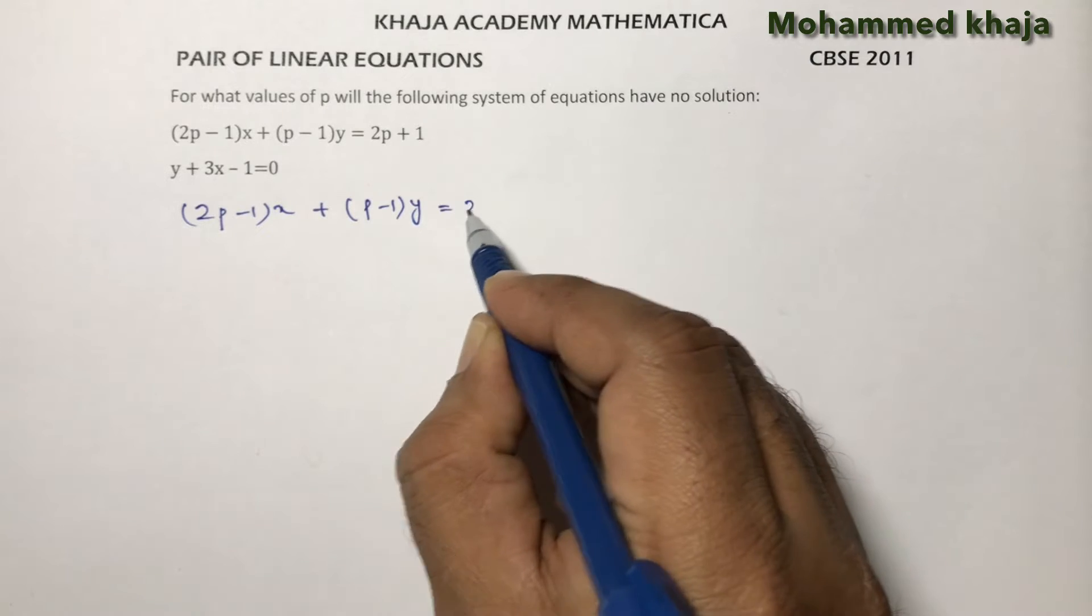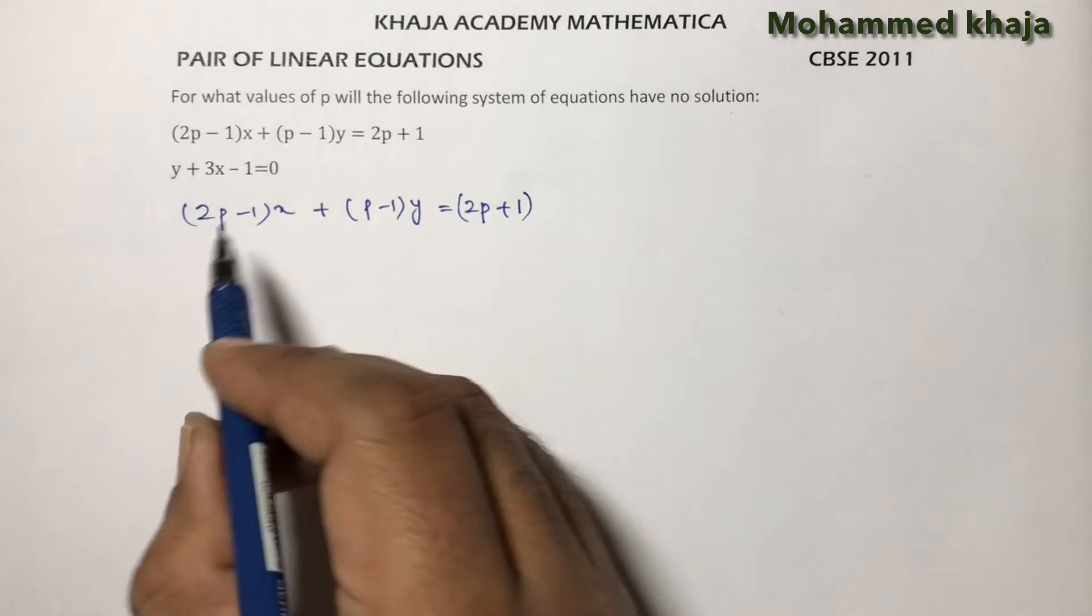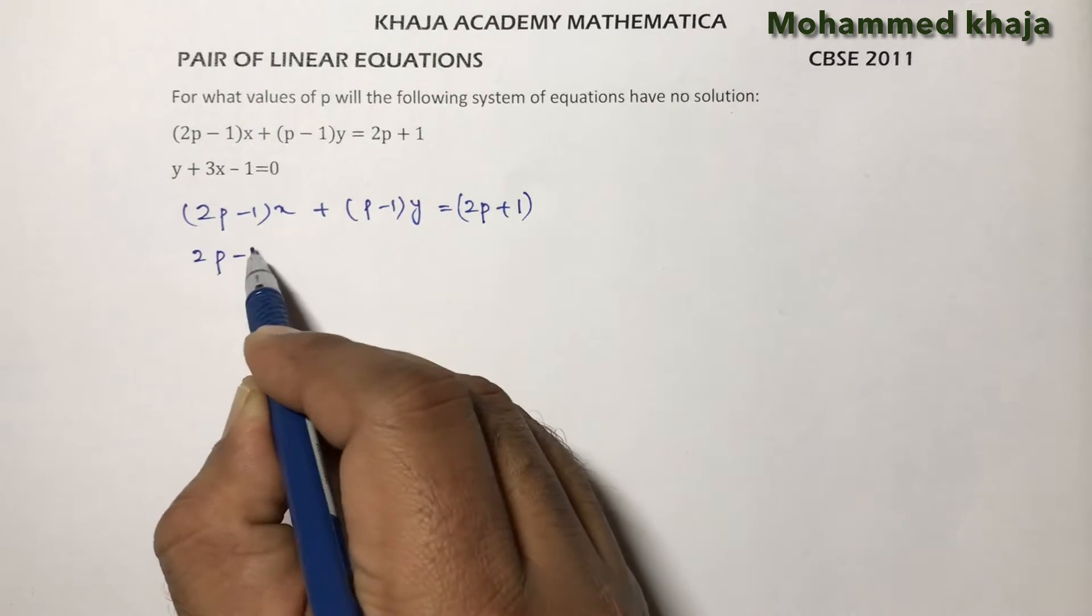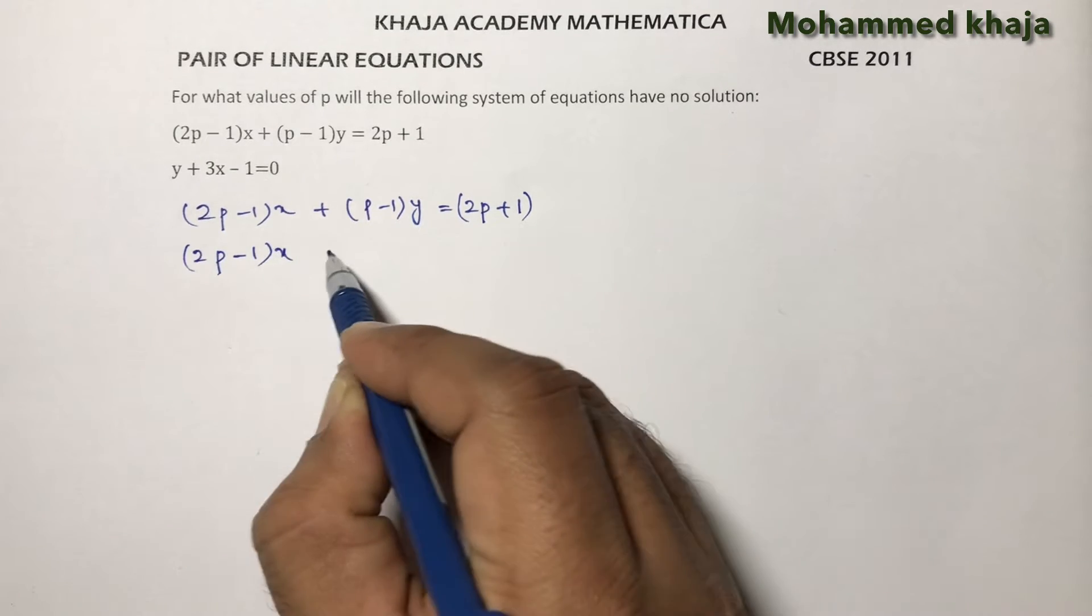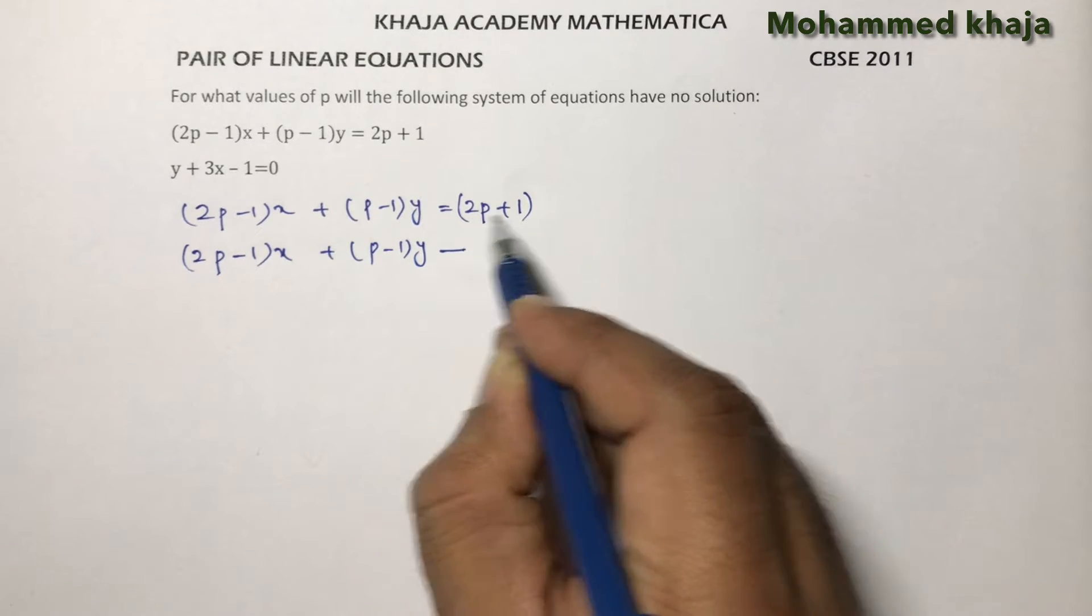If you want to represent in standard form, bring to the left-hand side like (2p - 1)x + (p - 1)y minus, there are two terms, so use brackets like (2p + 1) = 0.